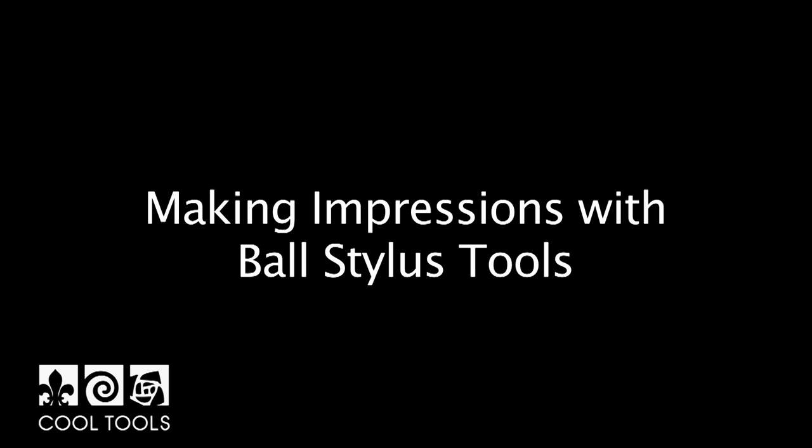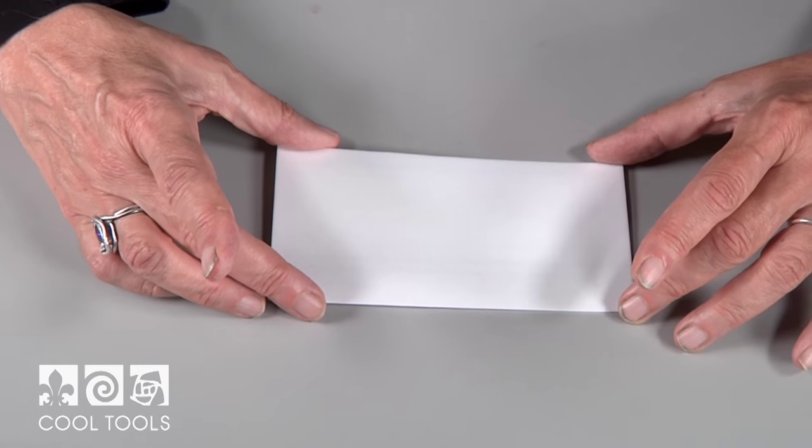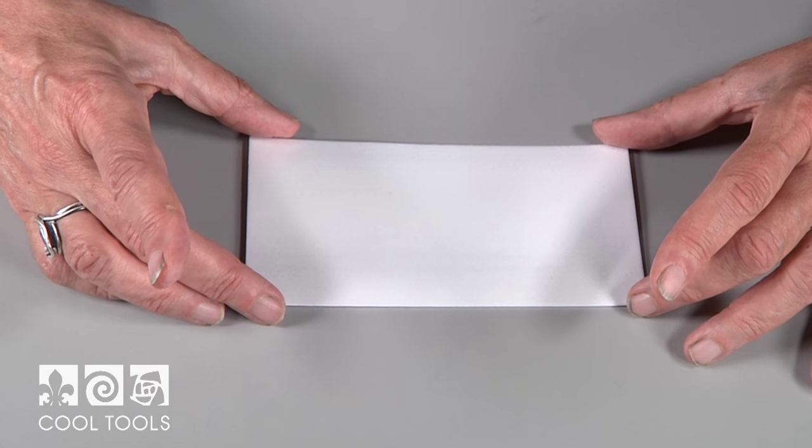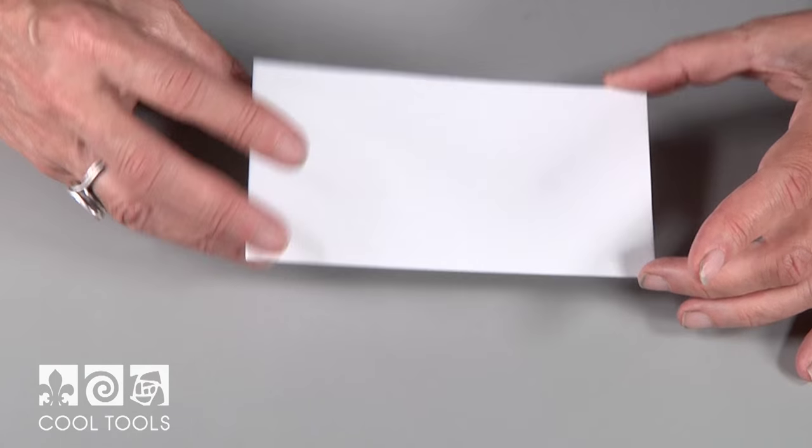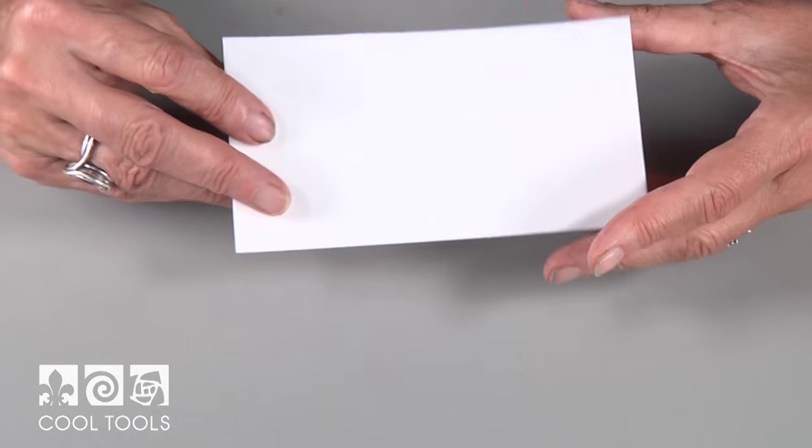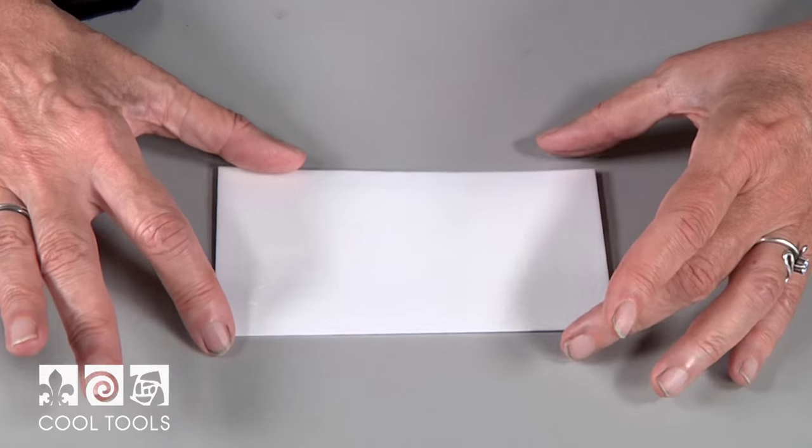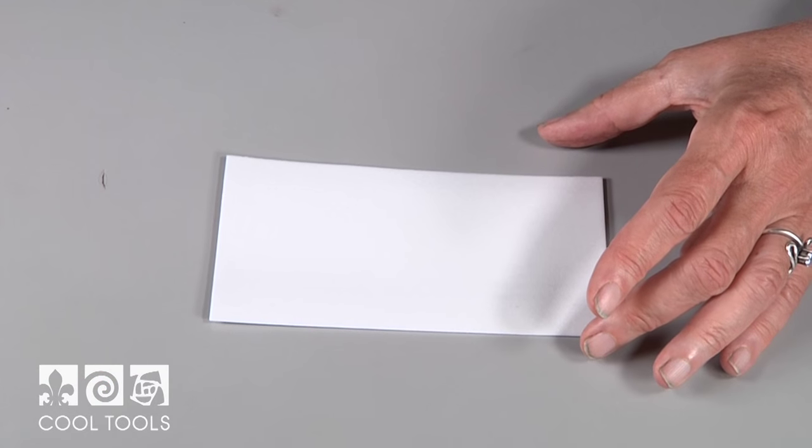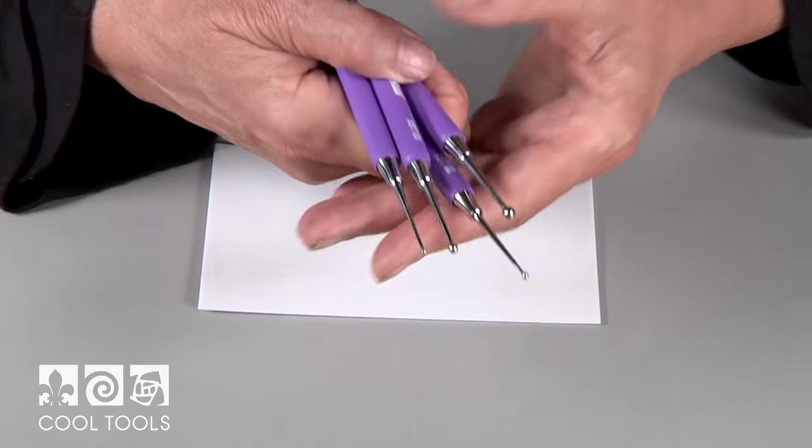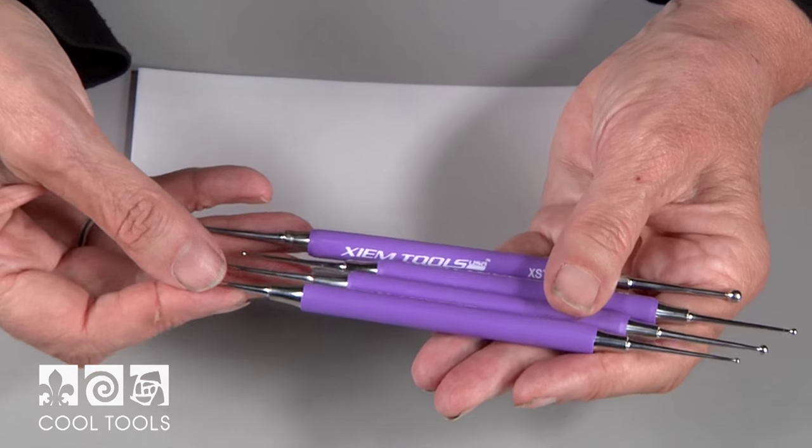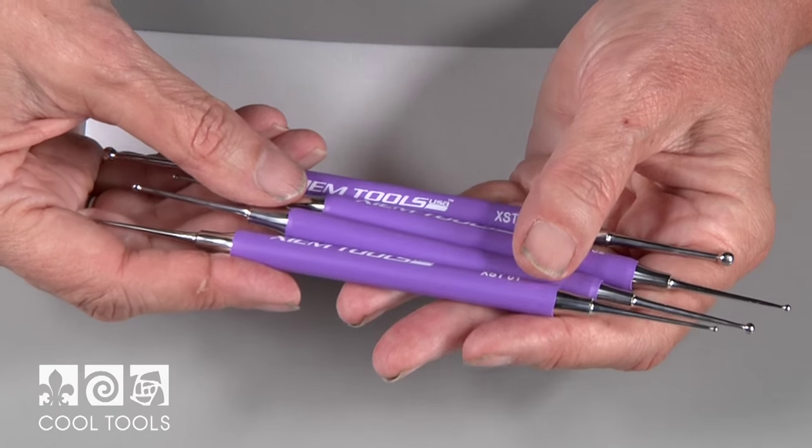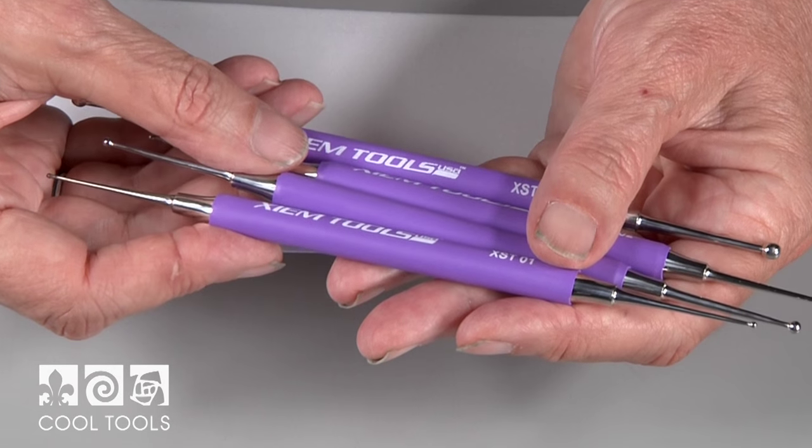Now I'm going to show you how to start impressing the scratch foam when you're working directly without tracing a design. This is a piece of scratch foam that's been prepared - I have the packing tape on the back and I've lubricated the top. I'm also going to be working with these wonderful Zim ball stylus tools that Cool Tools sells.